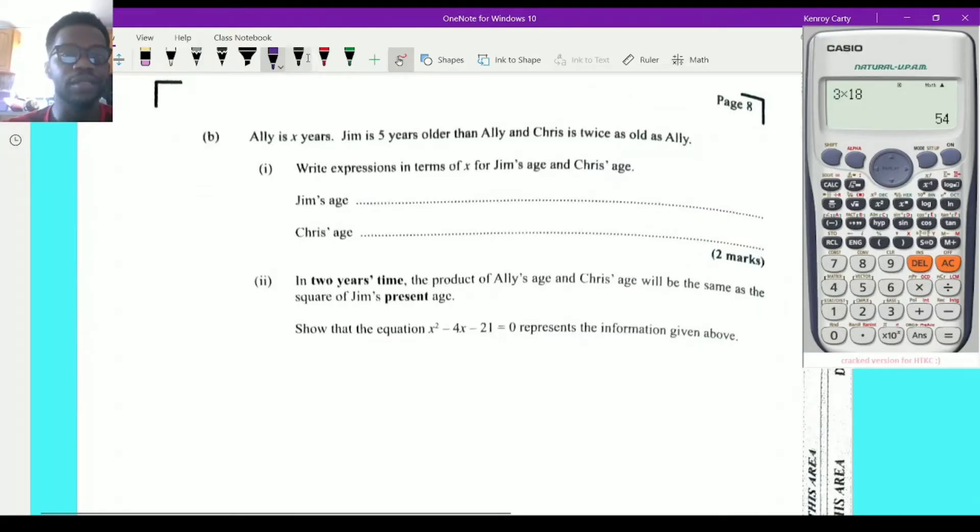Now let's look at the next question. Still a little bit pale, but I'm going to read. It says, write an expression in terms of x for Jim's age and Chris's age. Now, please remember that Ali is x. So that is Ali. Jim is five years older than Ali. So for Jim to be five years older, it must be Ali's age plus five. Chris is twice as old as Ali, and Ali is x. So it's going to be two times whatever Ali's age is, which is two times x, which we simply write as 2x. So for Jim's age, I simply just put my expression x plus five. And for Chris's age, it's going to be 2x. Not much problem there.